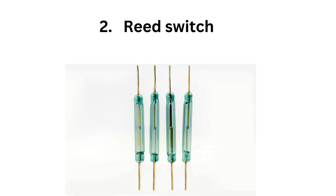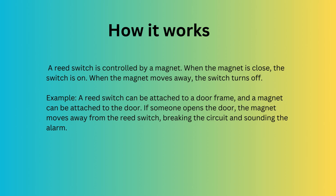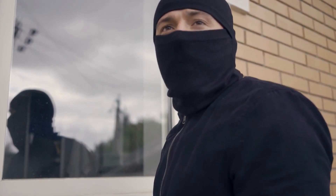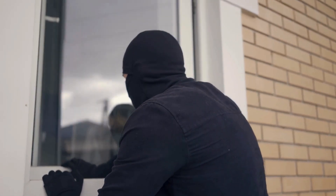The next one is the reed switch. Have you ever seen a burglar alarm system? When a door or window opens, the alarm goes off — this system often uses a reed switch. A reed switch is controlled by a magnet. When the magnet is close, the switch is on. When the magnet moves away, the switch turns off. For example, a reed switch can be attached to a door frame and a magnet to the door. If someone opens the door, the magnet moves away from the reed switch, breaking the circuit and sounding the alarm. These switches help us in many ways, like making our home safer and letting us know when someone is at the door.